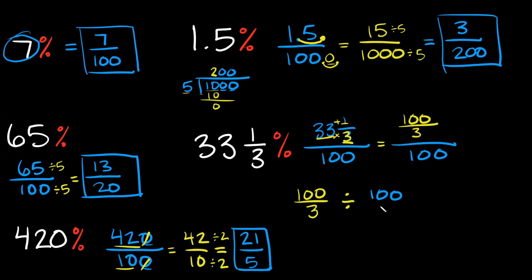To divide fractions, a little acronym I like is KFC — Keep, Flip, Change. This tells me to keep my first fraction as it is, flip my second fraction (but since it's a whole number right now, I first put it over 1, making it 100 over 1), and then flip it. The C stands for change your sign — so instead of dividing we're going to multiply.